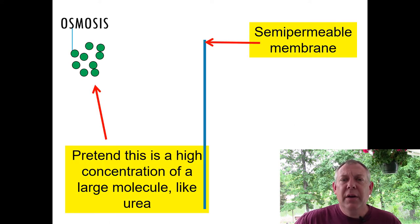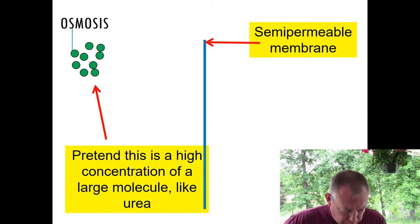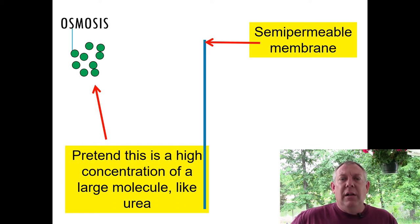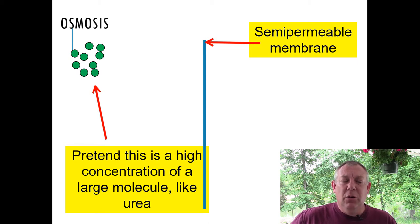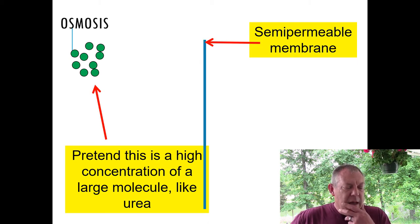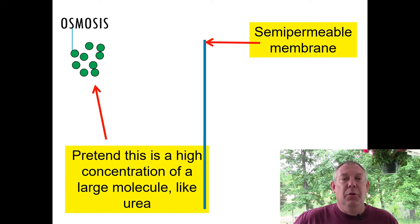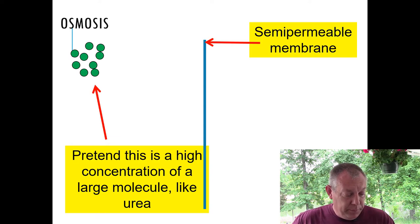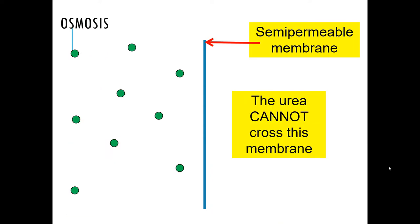Let's go back to our earlier example: we've got a concentration of a molecule on one side of a semipermeable membrane. Let's pretend this is a big molecule like urea — a big molecule that cannot cross the membrane. So it will diffuse and spread out, but only on one side of the membrane; it cannot spread out to the other side.